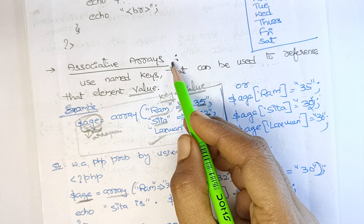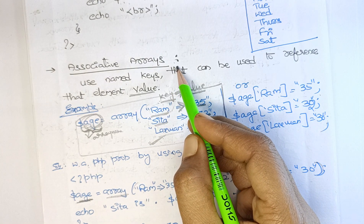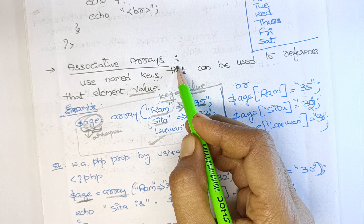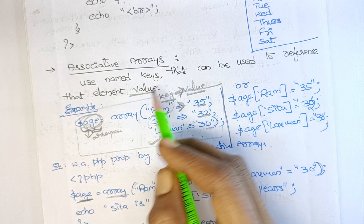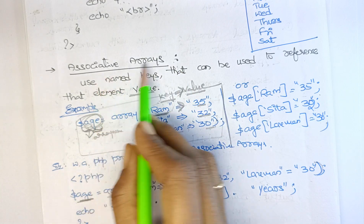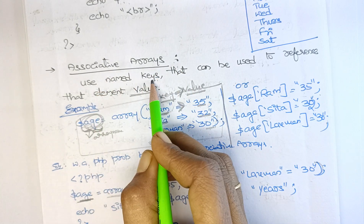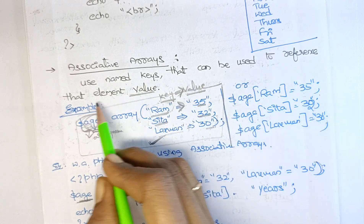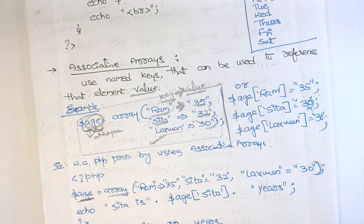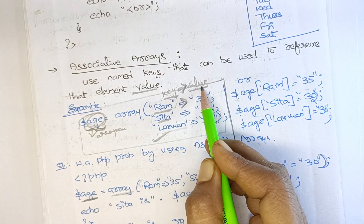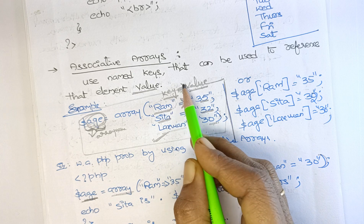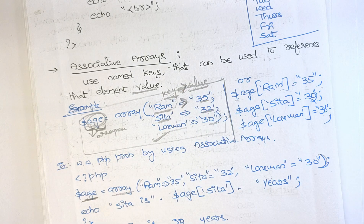Now we will see associative arrays in PHP. If you did not see the previous video on what is an array and index arrays, please watch that video — the link will be provided in the description. Associative arrays use named keys that can be used to reference their element values. In other words, the associative array uses key-value pairs with the key double-arrow value syntax.